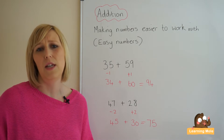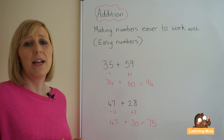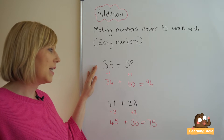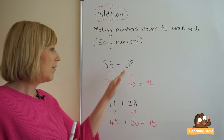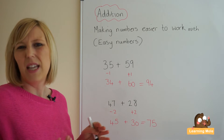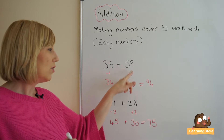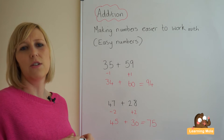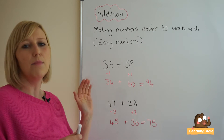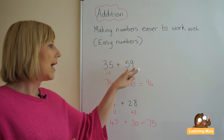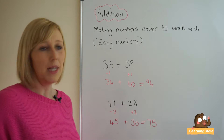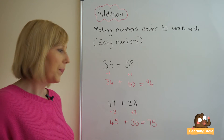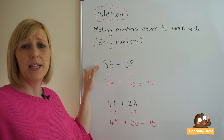Basically, this strategy is all about adjusting a number so that it becomes easier to manage. Take the calculation 35 plus 59. We really want to use this strategy when we have numbers in the six, seven, eight bracket that are pushing up into the next multiple. We're not adjusting massively — just by small numbers. So this strategy is for when a number is close to a multiple of 10. We're looking at 59, which is very close to the multiple of 60.